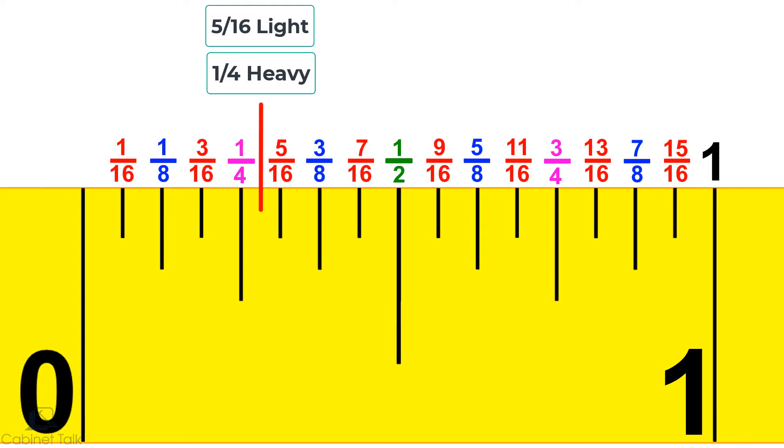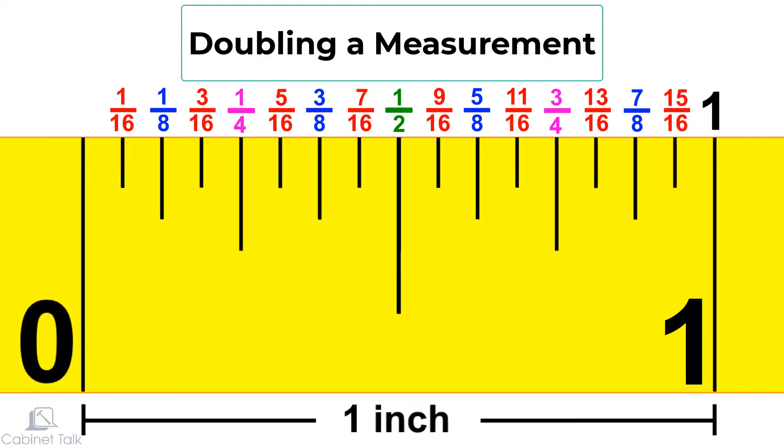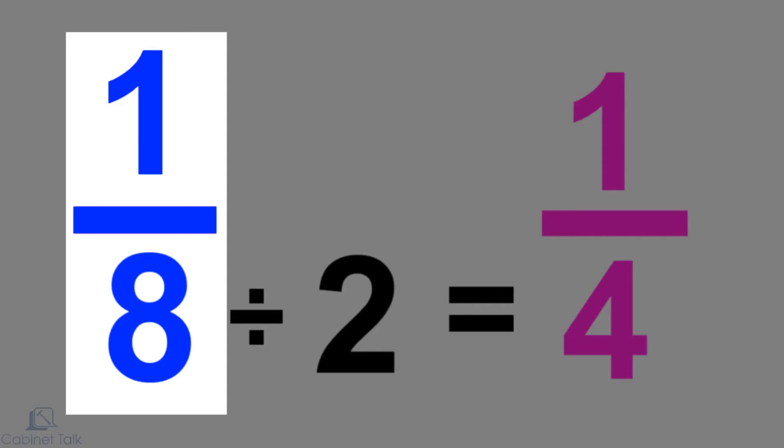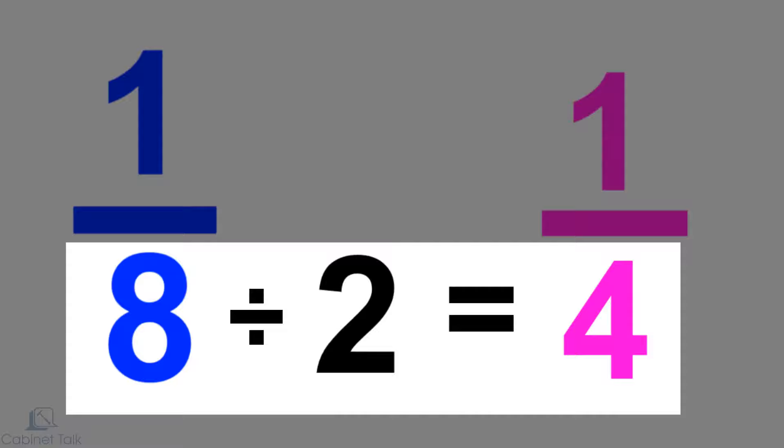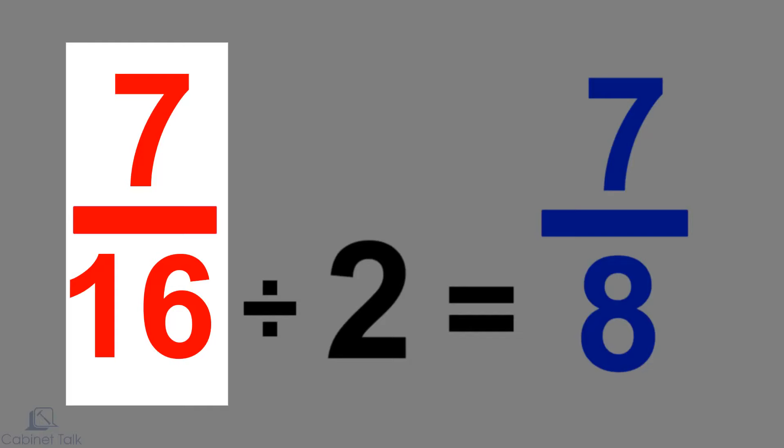The same shortcut we used earlier can be used in reverse to double the measurement. To double one-eighth, for example, divide the denominator by two. This gives us one-quarter. Doubling seven-sixteenths gives us seven-eighths.